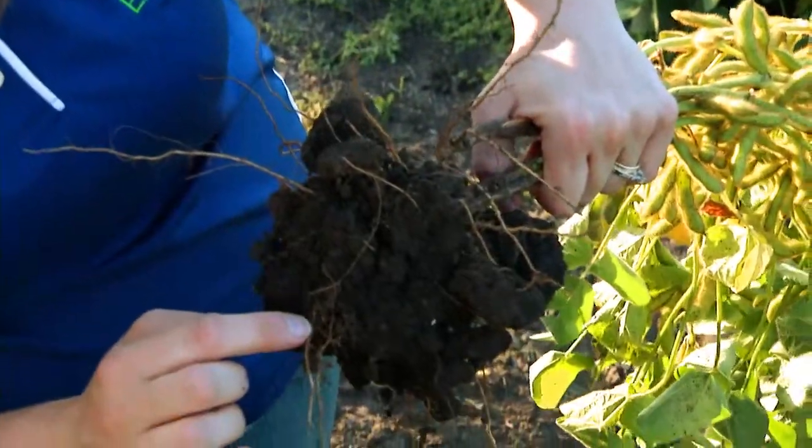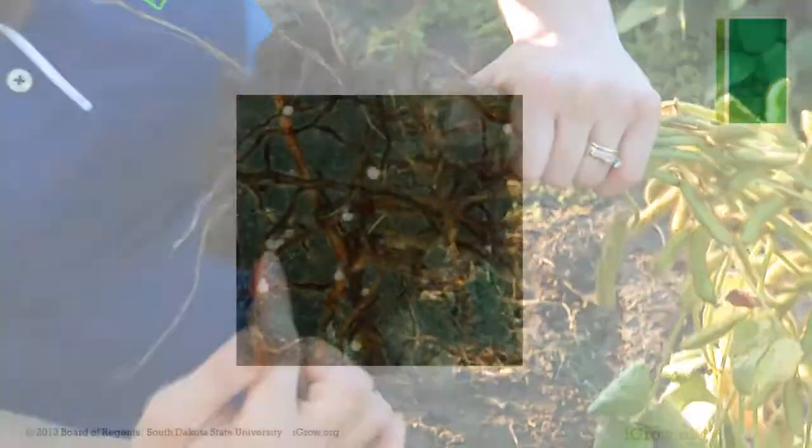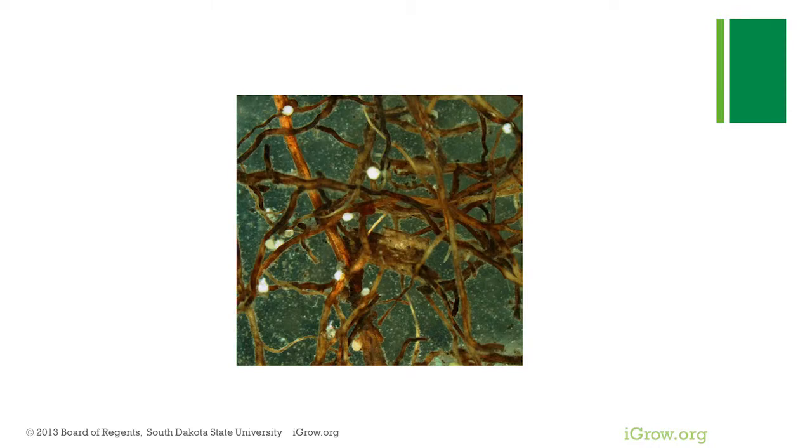The second juvenile stage will molt again into the third juvenile, and then molt a final fourth time to become an adult. Around the third juvenile stage, the nematode has the shape of a hot dog. Once it reaches the fourth juvenile stage, you have differentiation of the sexes — females and males. The males become worm-like and exit the roots to mate with the females. The females remain inside, feed, and produce eggs; the bulging you see on roots is the body of a female cyst nematode filled with eggs.